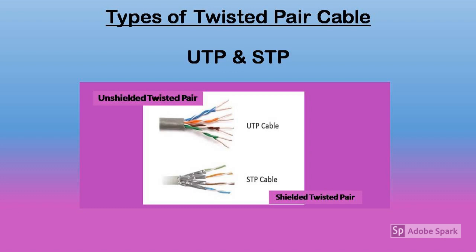Twisted pair cable comes in two types: UTP and STP. UTP stands for Unshielded Twisted Pair and STP stands for Shielded Twisted Pair. In UTP the wires are simply twisted together, whereas in STP the wires are twisted and also enclosed in a foil or mesh shield. Noise and cross-talk generation is comparatively less in STP. Cost-wise, UTP is cheaper than STP, while STP provides higher data rates. However, the most commonly used is UTP because it is cheaper.